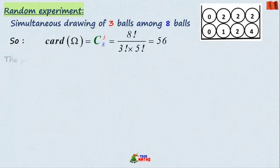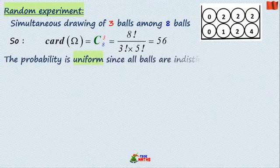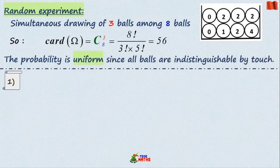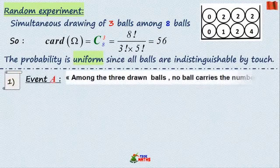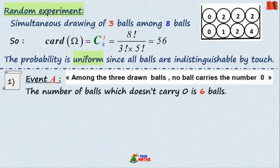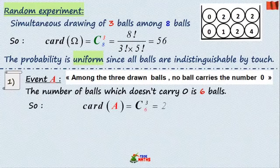Also note that balls are indistinguishable by touch, so the probability is uniform. The event A requires that the three drawn balls mustn't carry number zero. So cardinality of A equals C(3,6) equals 20.